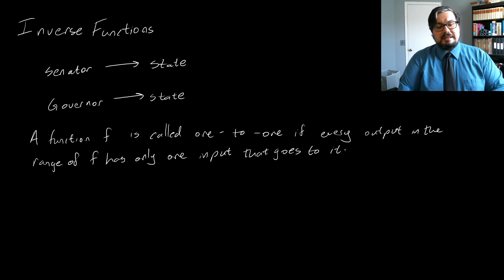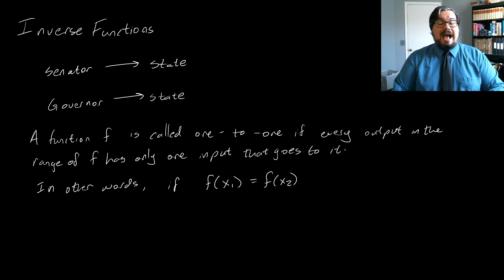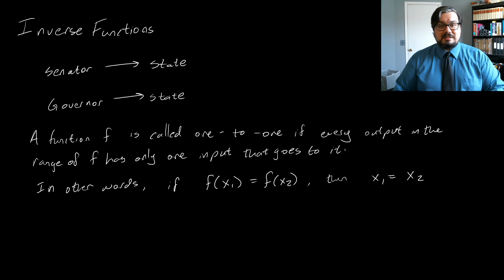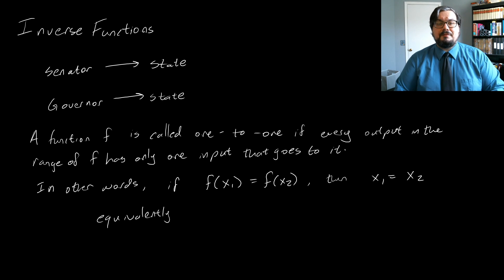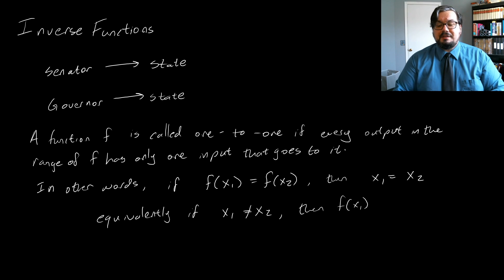More precisely, a function f is called one-to-one if every output in the range of f has only one input that goes to it. Another way of saying this: if we have that f(x₁) equals f(x₂) — that is, if two outputs of a function are equal — then that means x₁ has to equal x₂. Or equivalently, if x₁ is not equal to x₂ as two elements in the domain, then f(x₁) is not equal to f(x₂).